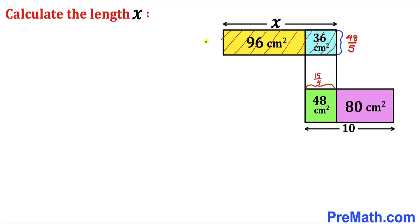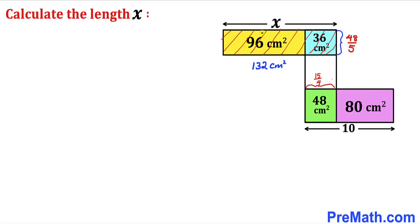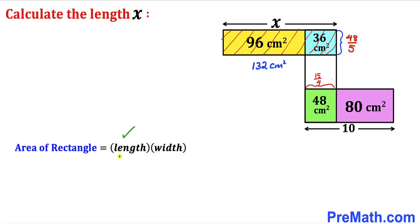Here's our next step. Let's focus on the yellow and blue rectangles combined. Their total area is 96 + 36 = 132 cm². The side lengths of this combined rectangle are x and 48/5. Using area = length × width: 132 = (48/5) × x.